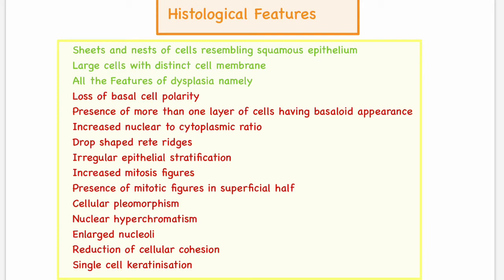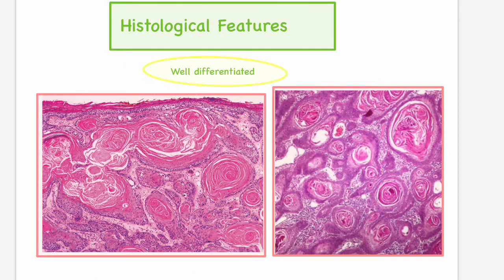This figure shows well-differentiated squamous cell carcinoma. As we can see, cells are arranged in sheets or nests and the cell of origin — the squamous cell — can be easily made out. Cells are generally large with distinct cell membranes, clearly visible, and nuclei are large and hyperchromatic as described in dysplasia features. Since it is a well-differentiated lesion, mitotic figures are predominant, and individual cell keratinization as well as formation of keratin pearls is marked.